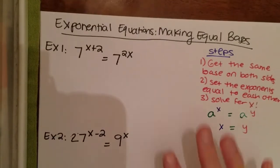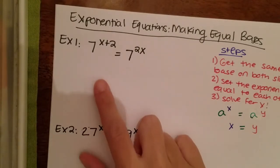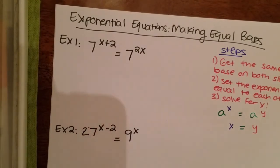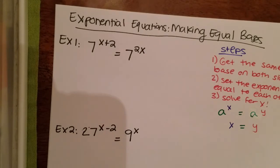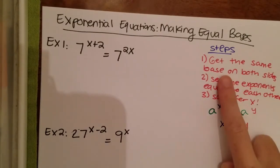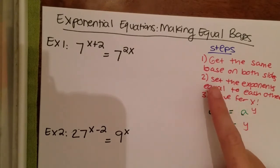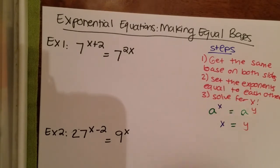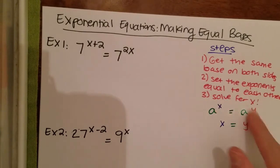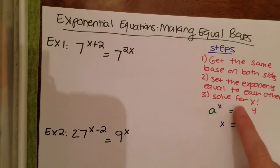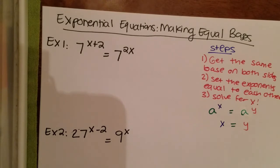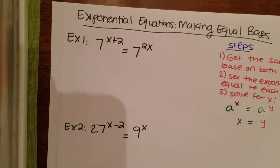Basically, if we have two exponentials on either side of an equation, our goal is to get the same base on both sides. Once we do that, we can set the exponents equal to each other and solve for x, which is using this property right here — if you have the same base, that means your exponents are equal. We've done this plenty of times.